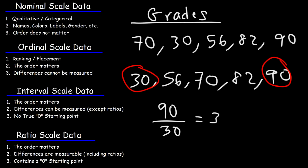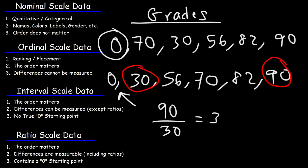And it does contain a true zero starting point. If a student didn't answer any questions, they would have a grade of zero — meaning they either didn't do the test or got all questions wrong. It has meaning: it means they didn't get anything right. And you can't have a score lower than zero — there's no such thing as a test score of negative 20. So zero is a true starting point for this form of data.